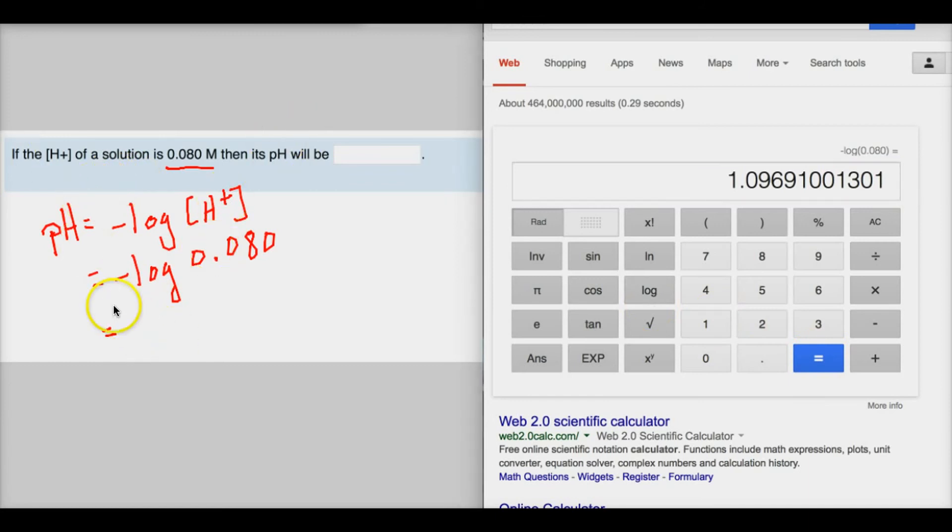So the pH of this solution if we round to the thousandths place is going to end up being 1.097 which would end up being an acid on the pH scale.